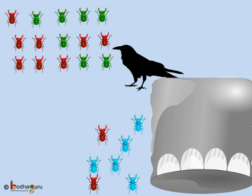Good morning everyone. We know both genetic drift and natural selection are important to evolutionary processes. But what is the difference between these two?